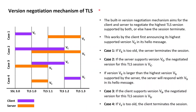The version negotiation mechanism built into TLS aims for the client and the server to negotiate the highest TLS version supported by both. Otherwise, in case the client and the server don't have a common TLS version supported by both, the built-in version negotiation mechanism aims to have the TLS connection gracefully closed. To see how this works, we just need to briefly remind ourselves that the first message sent in a TLS handshake is the client hello message sent from the client to the server.